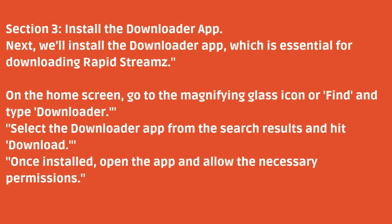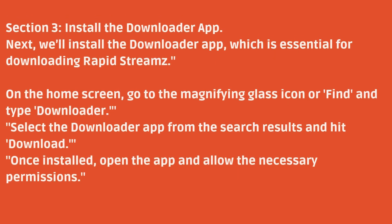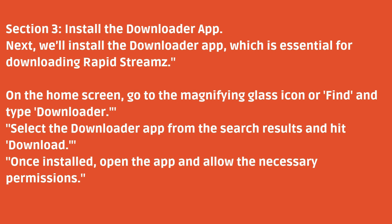Section 3: Install the Downloader app. Next, we'll install the Downloader app, which is essential for downloading RapidStreams. On the home screen, go to the magnifying glass icon, or Find, and type Downloader. Select the Downloader app from the search results and hit Download. Once installed, open the app and allow the necessary permissions.